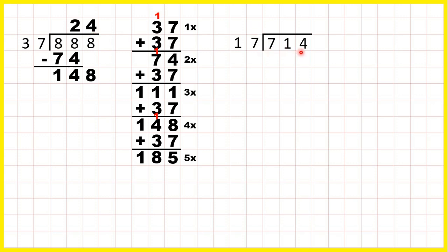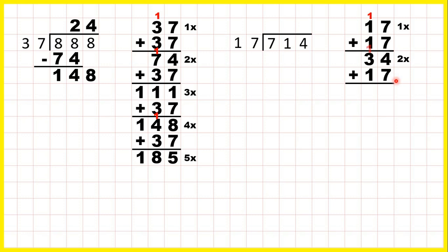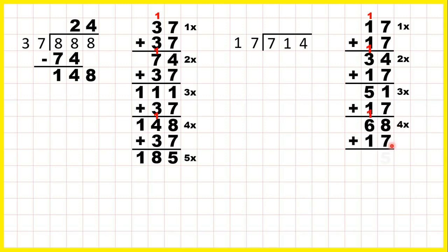Now 714 divided by 17. So we need our 17 times table. 17 is 1 times. Add another 17 and that gives us 34 for 2 times. Another 17, we know that 51 is 3 times. We get 85 for 5 times 17.